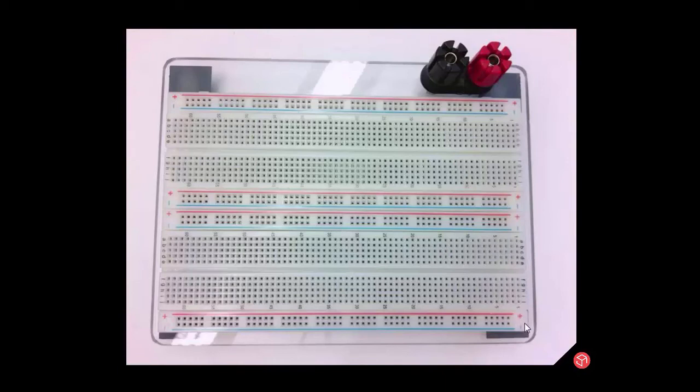Let's recap the board layout. There are power rails connected horizontally here, and there are component rails connected vertically.